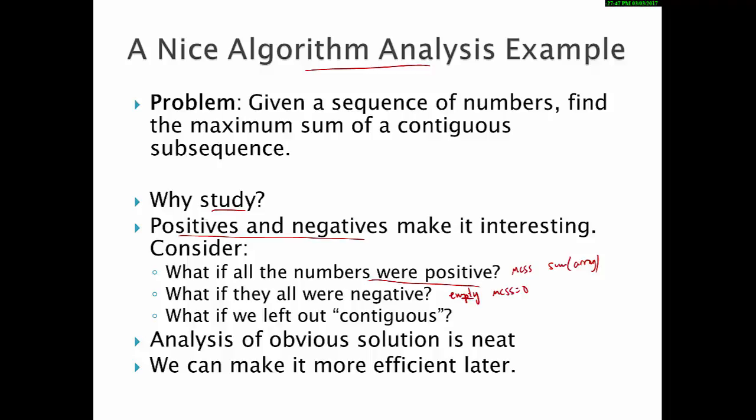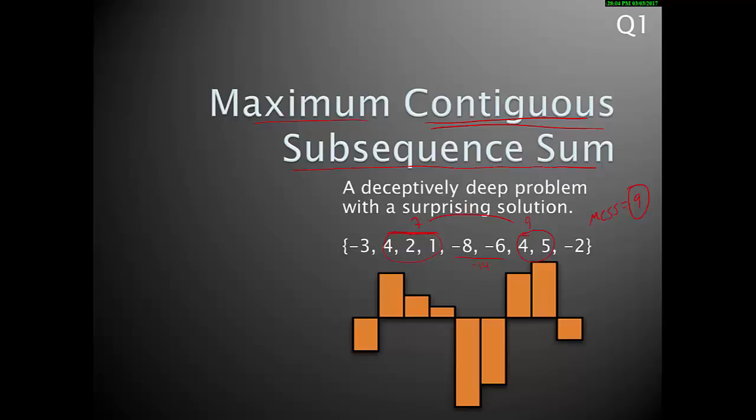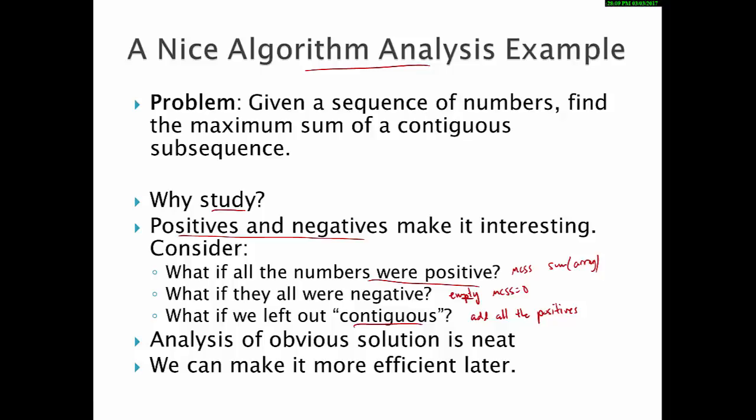What if this were just the maximum subsequence sum? So we left out the word contiguous. Well, then you're right, you would add all the positives and just skip the negatives. So in that case, we'd go back here and you would just add the seven to nine and get 16. But that's also kind of boring. So it's really this mix of them that makes this an interesting problem to solve.